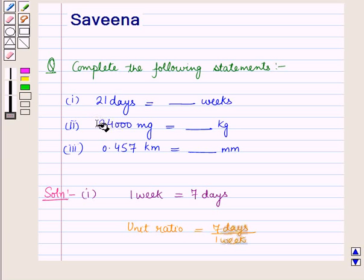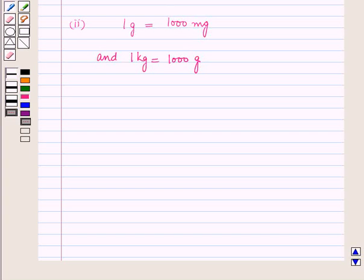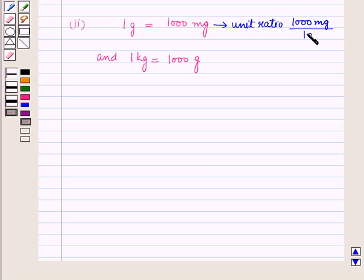Now let us start with the second part. In the second part we have to convert 24000 milligrams into kilograms. Now we know that 1 gram is equal to 1000 milligrams, and 1 kilogram is equal to 1000 grams. The unit ratio is 1000 milligrams upon 1 gram, and the second unit ratio is 1000 grams upon 1 kilogram.